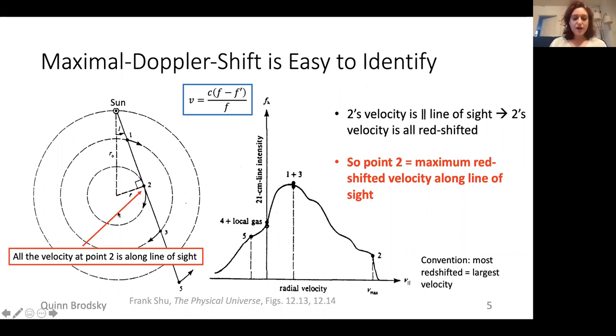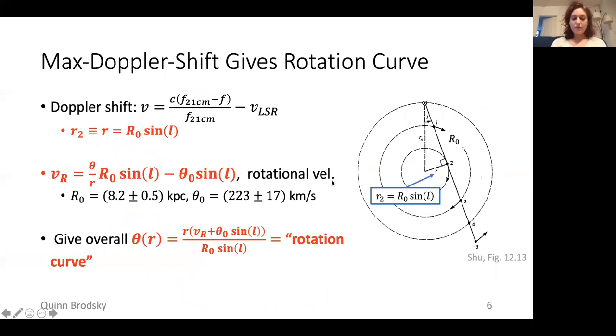If we look at this diagram, we see that at certain points near the galactic center, like point two, all of the velocity is tangential to the line of sight. So that means that all of its velocity is red shifted, unlike maybe point one or point three here, where a lot of the velocity is perpendicular to the line of sight. All of its velocity is red shifted because in this diagram it's moving away from us. So this means that if we look at the distributions of velocities along a line of sight, the velocity that is most red shifted corresponds to points like point two.